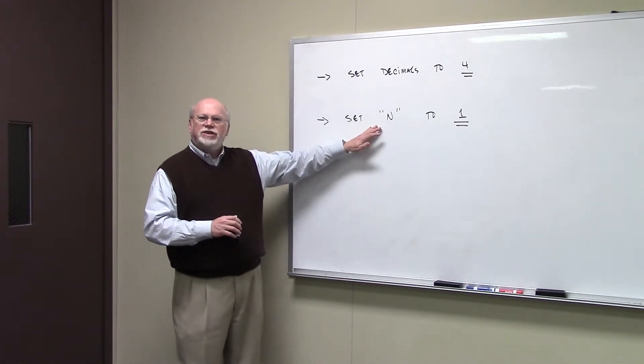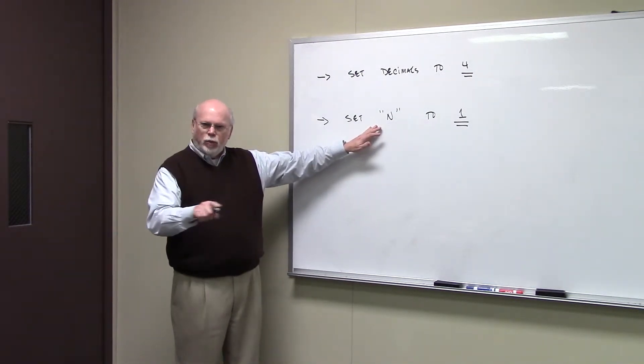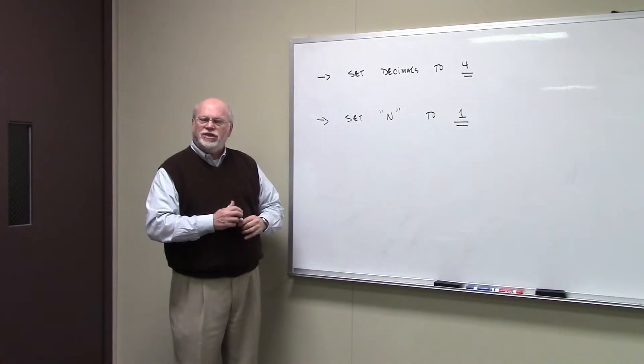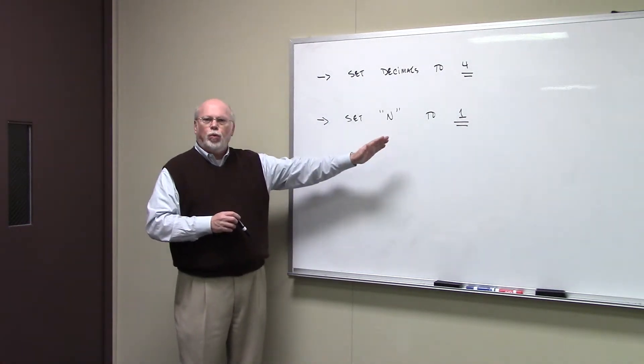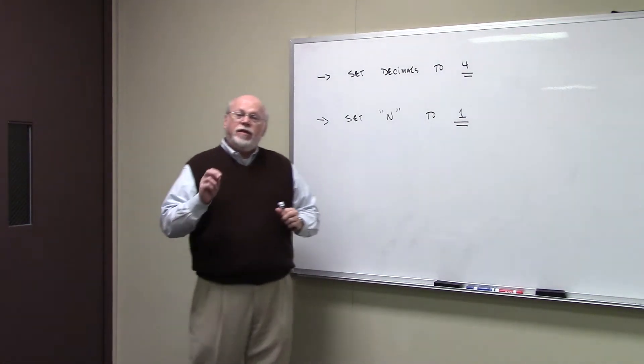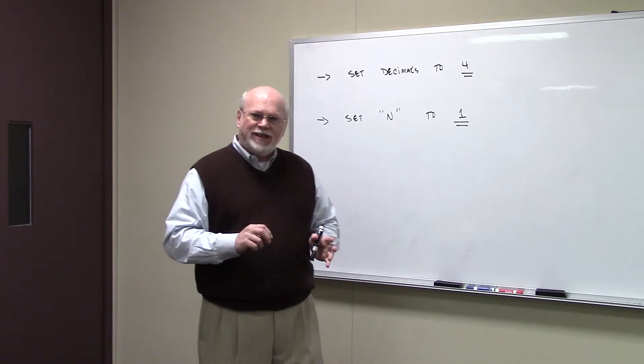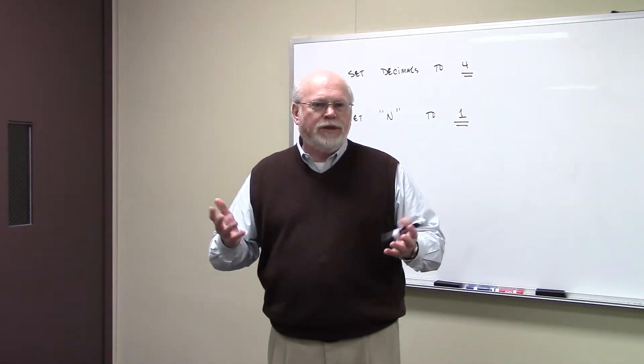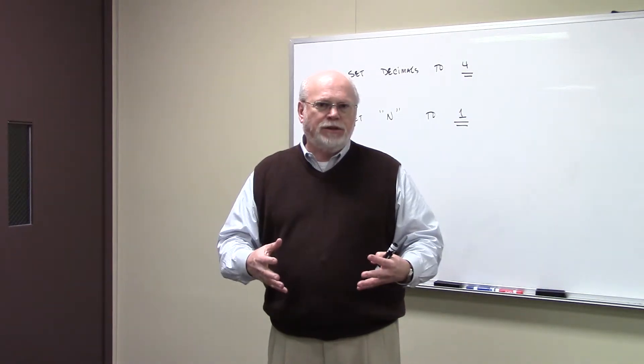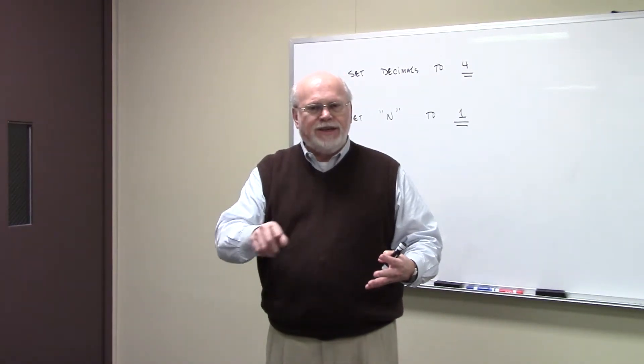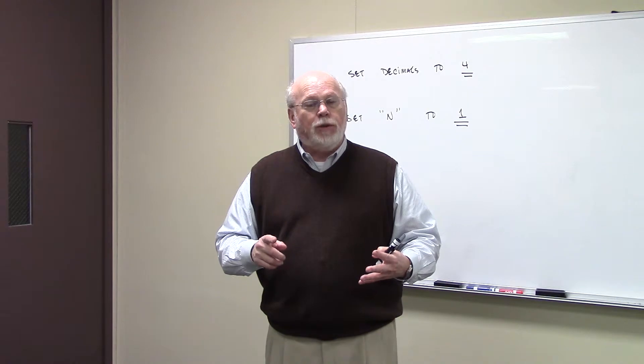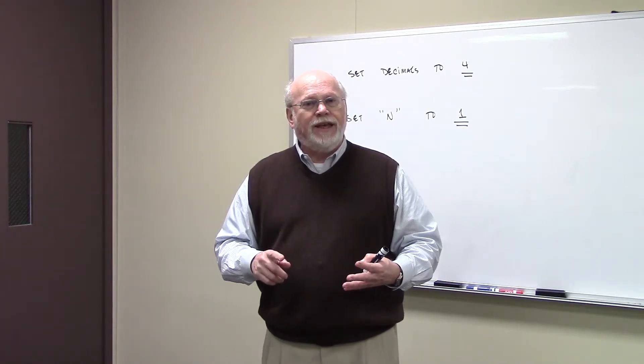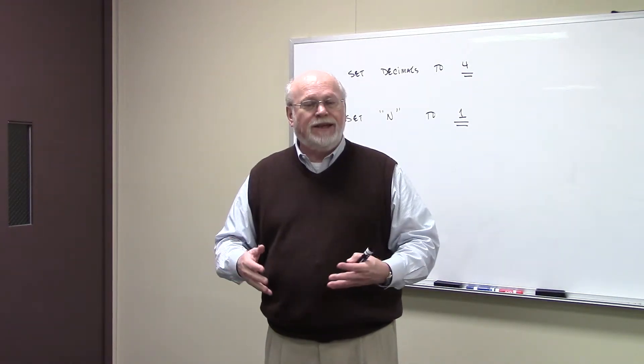The other thing that you need to do is set the N. One of those time value main buttons is N. Set N to one. The factory presets N to twelve. So if we have a problem that deals with ten payments and you put N equal to ten, the calculator's going to multiply that by twelve. It's going to think N is 120, ten times twelve.